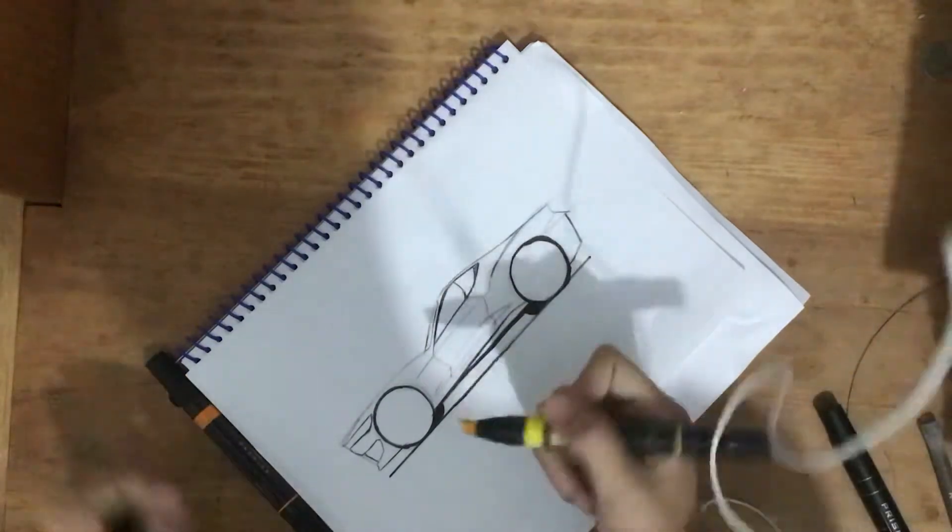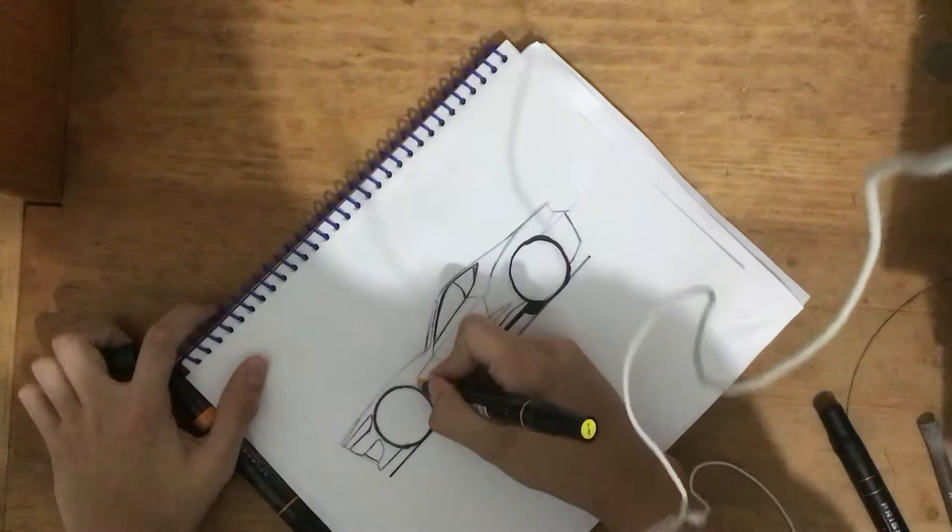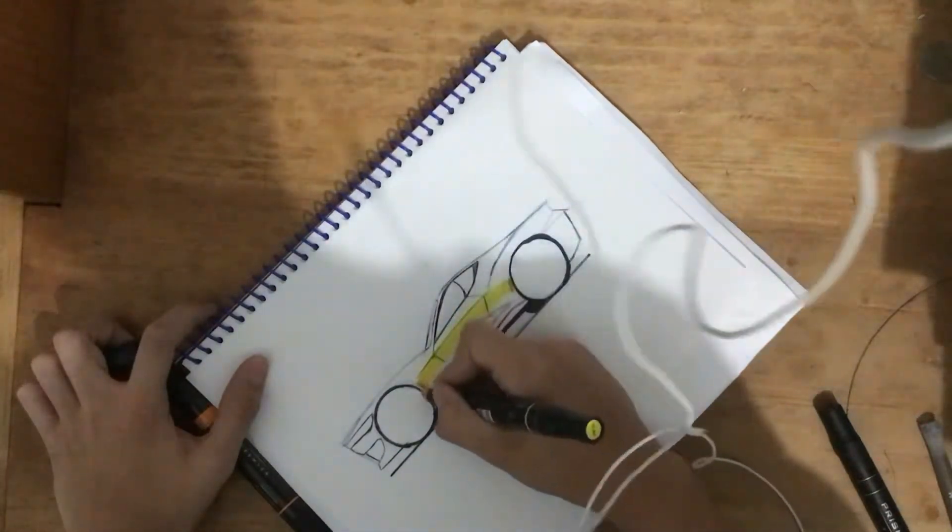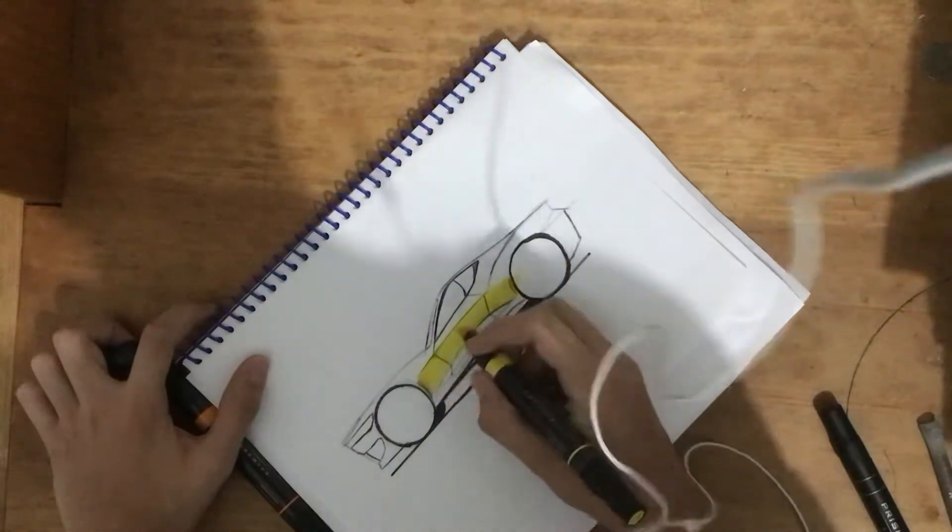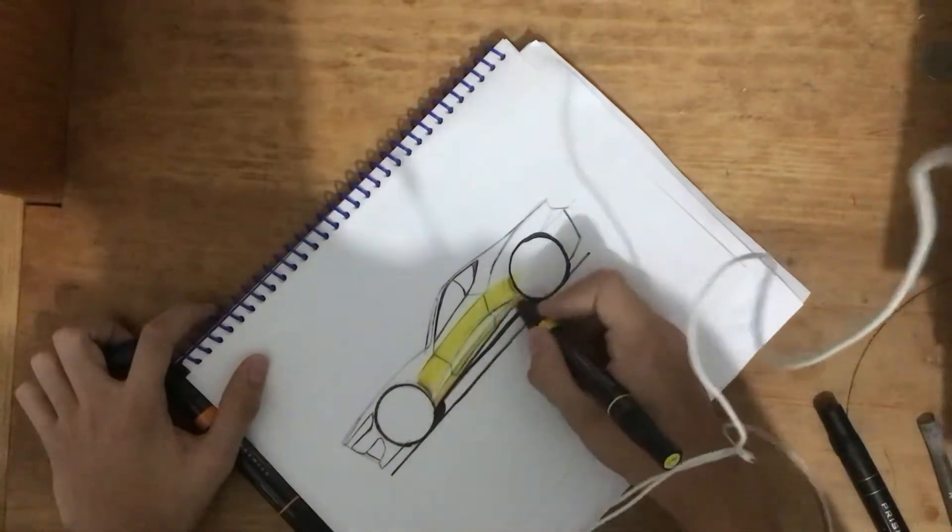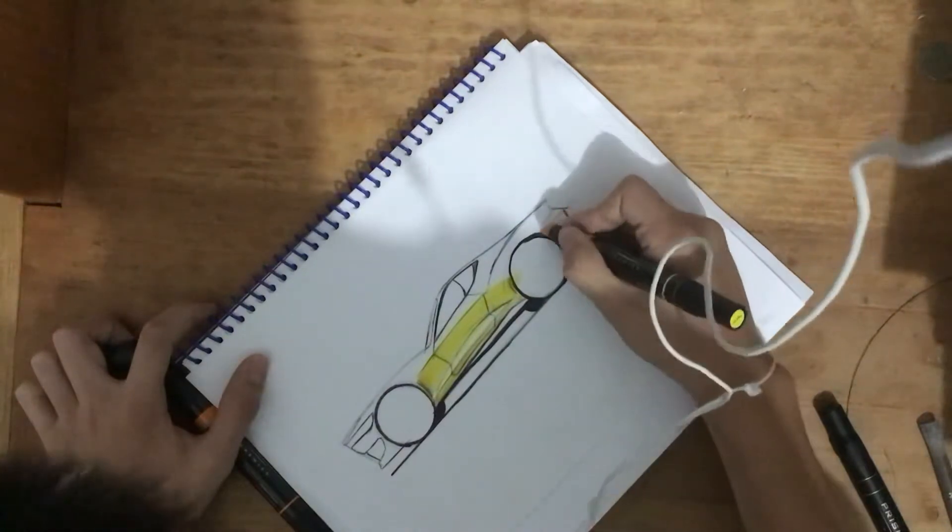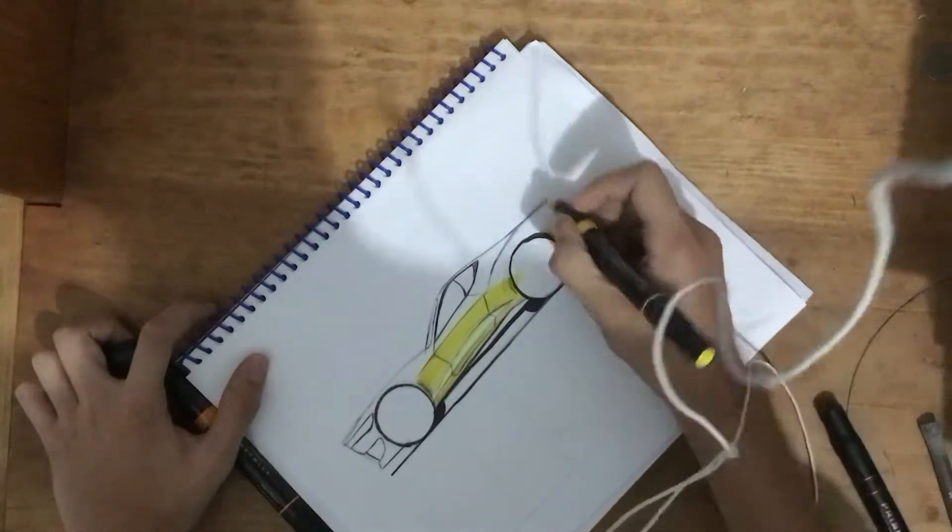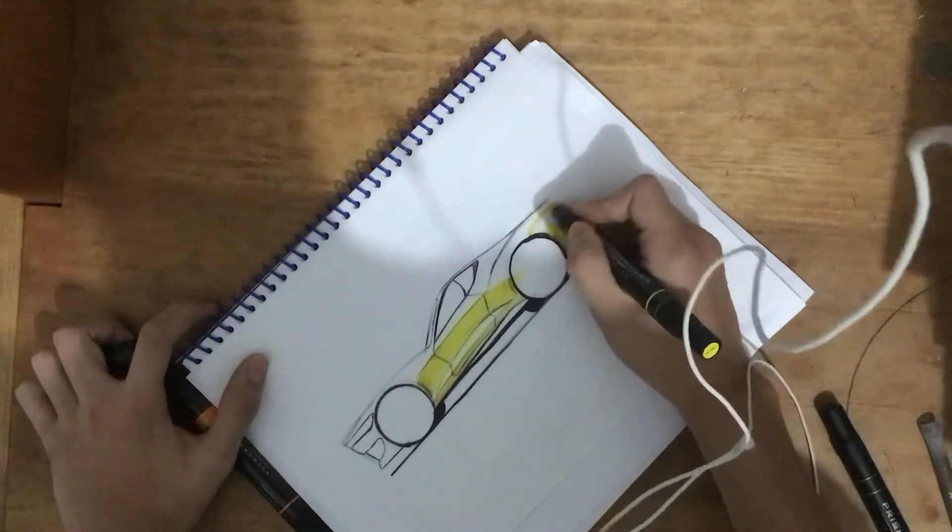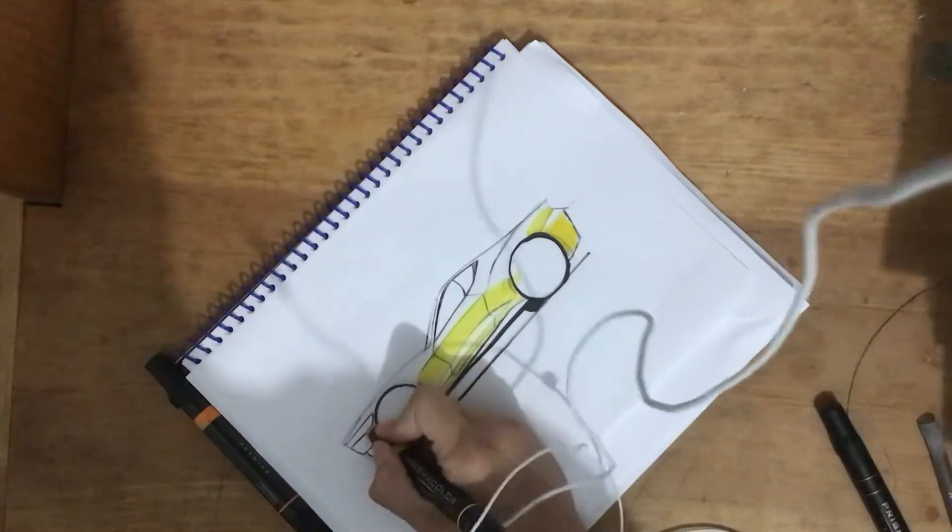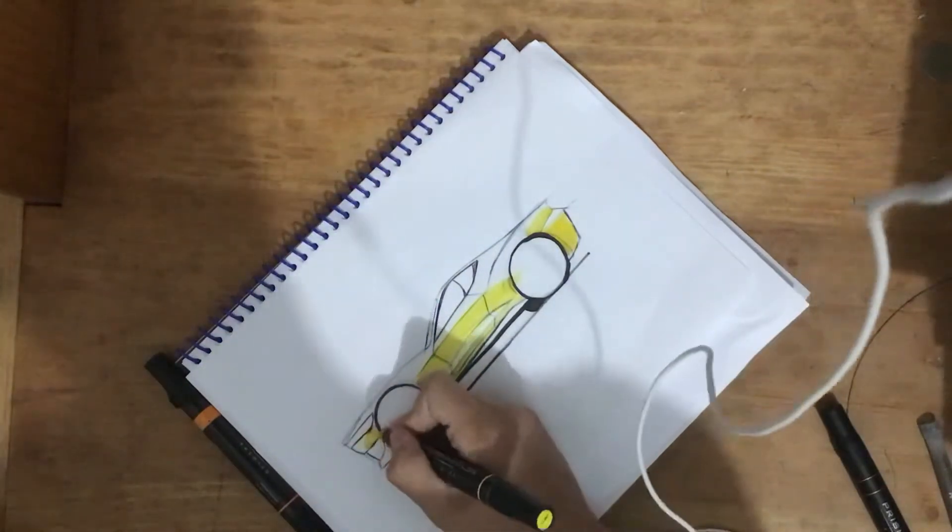First of all you want to start with your lightest shade. In this case I'm going to be coloring the car orange, so I'm starting out with a shade of yellow. To really know where you're going to put the marker down, you need to know how the surface of your car works, where everything is facing.